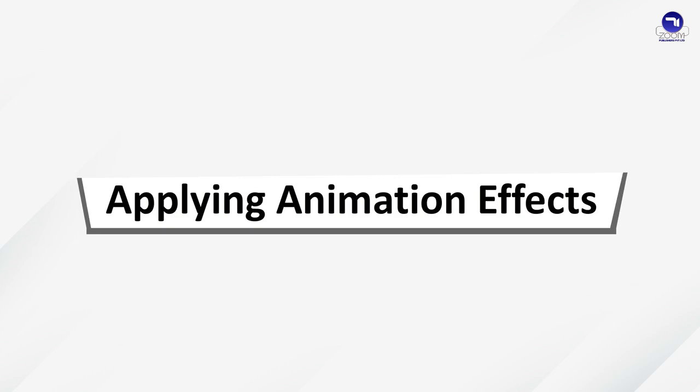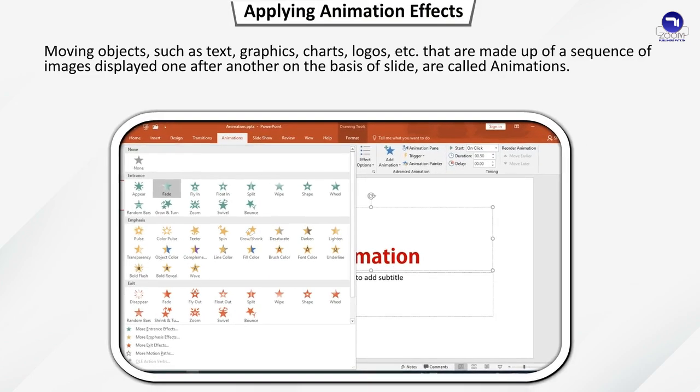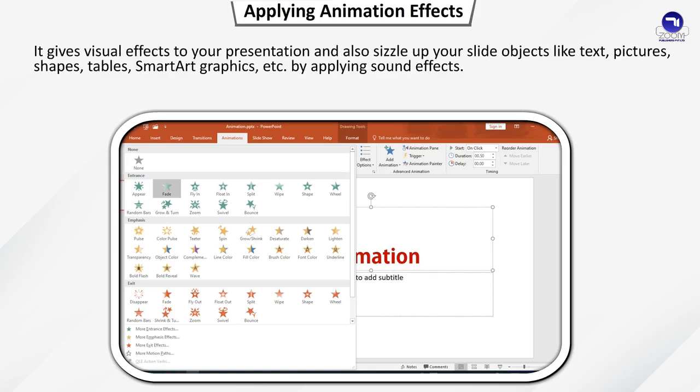Applying Animation Effects. Moving objects such as text, graphics, charts, logos, etc., that are made up of a sequence of images displayed one after another on the basis of a slide are called animations. It gives visual effects to your presentation and also enhances slide objects like text, pictures, shapes, tables, smart art, graphics, etc., by applying sound effects.